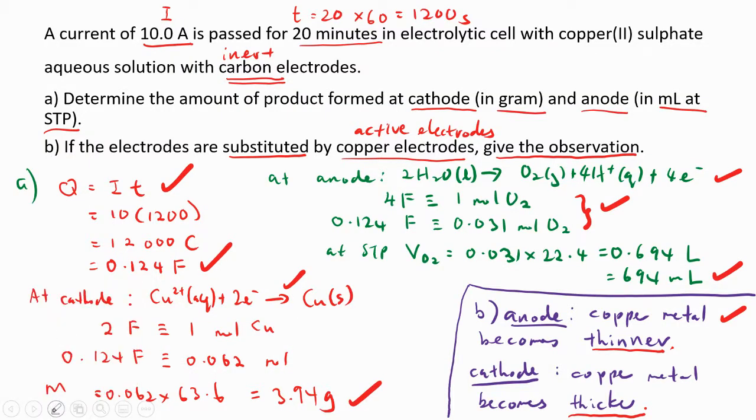Now we go for the calculation part. A current of 10 ampere is passed for 20 minutes in electrolytic cell with copper(II) sulfate aqueous solution with inert electrodes. Determine the amount of product formed at cathode and anode. Remember, we have copper. When we compare with the standard reduction potential, copper will be reduced.